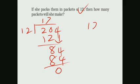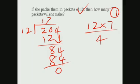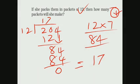We will check here. 12 into 7: 7 twos are 14, remaining 1. 7 ones are 7 plus 1 equals 8. Correct. 12 sevens are 84. Then the answer is 17.